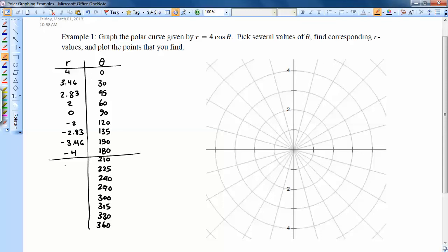210, negative 3.46. 225, negative 2.83. 240, negative 2. 270, 0. 300, 315, 2.83. 330, 3.46, and 360 back to 4.